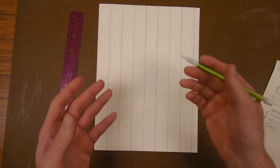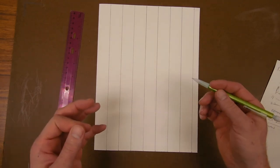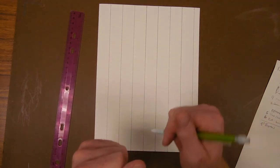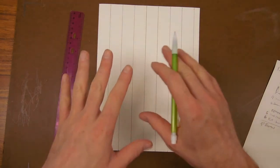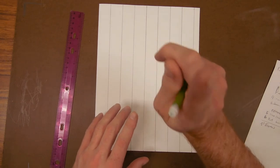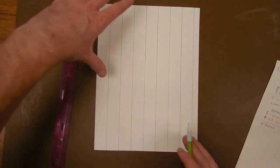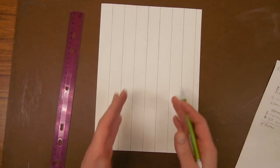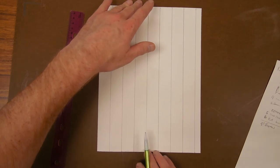You might also be thinking to yourself, Mr. Morris, you just told us to not make the lines dark, and you made the lines dark. Yes, I did. This is because I want you to be able to see it on my page. If I do them lightly, you may not be able to see them because this camera isn't always the best. All right, now I've got them on one side. I have half of my grid done.